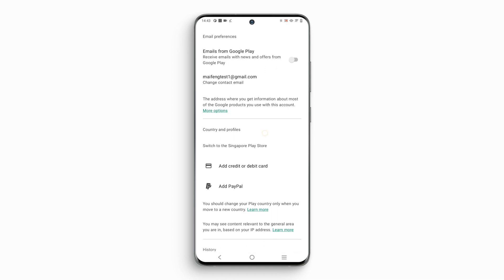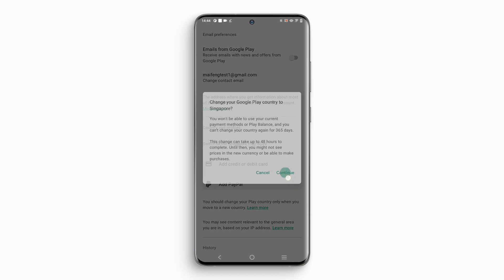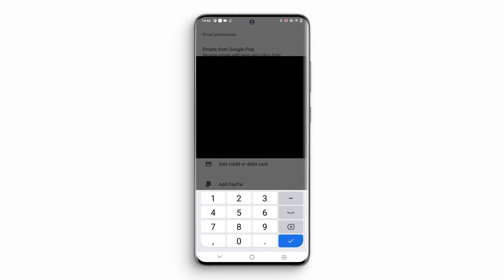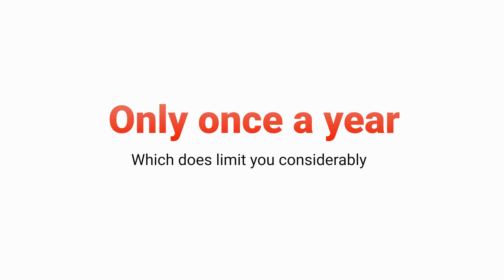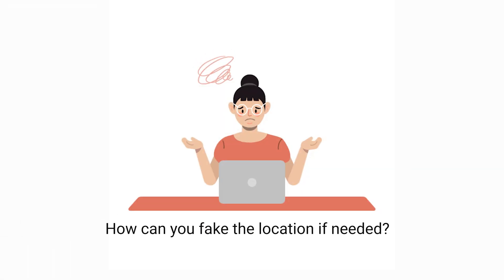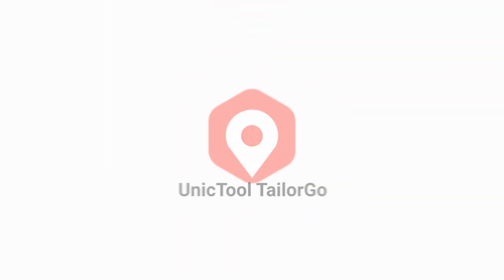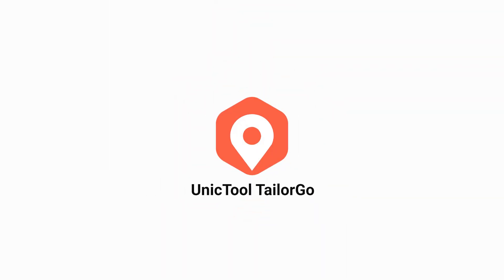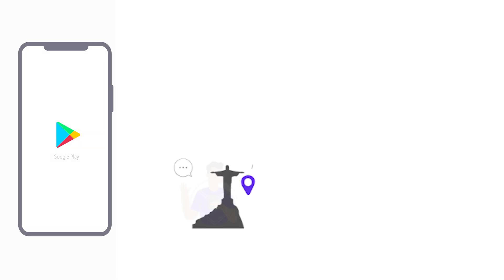Step 3: Select the country where you want, but you need to provide a relevant payment method. It should be mentioned that you can only do this once a year, which does limit you considerably. So how can you fake the location if needed? If moving to a new country is not possible for you, then an effective alternative is to download a location spoofing app like Unique Tool's Tailor Go, which changes your location to where the service is available.